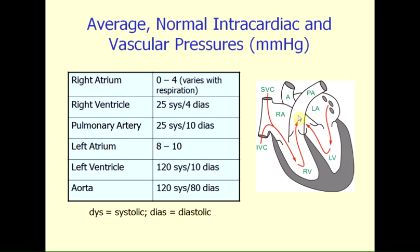The pressure within the pulmonary artery is typically around 25 millimeters of mercury for its systolic pressure, and its diastolic pressure is 10. When the right ventricle ejects blood into the pulmonary artery and reaches a peak pressure of around 25 millimeters of mercury, you'll have roughly the same pressure within the pulmonary artery. But as the ventricle begins to relax, this pulmonary valve will suddenly close, and that prevents the pulmonary arterial pressure from falling all the way back down to the diastolic pressure in the right ventricle.